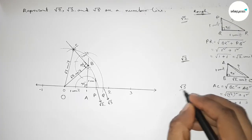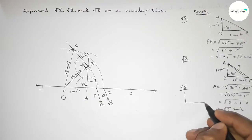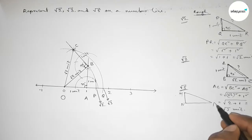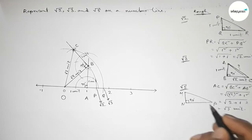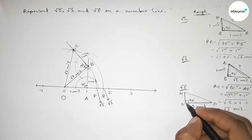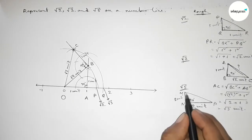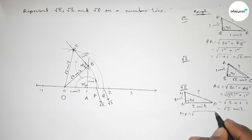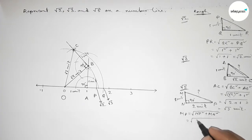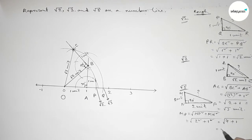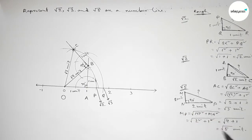Next we have to represent root 5 on the number line. Roughly drawing a right angle triangle MNP with a 90 degree angle. Taking base equal to 2 units and height equal to 1 unit. By Pythagoras theorem, hypotenuse NP equals root over 2 squared plus 1 squared, which is root over 4 plus 1, so this equals root 5 unit.